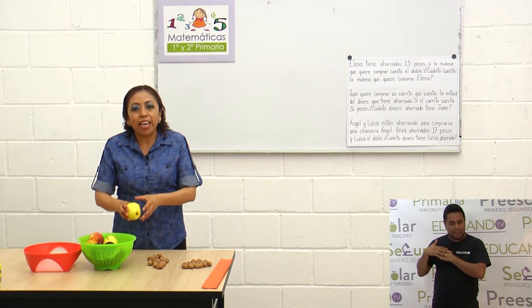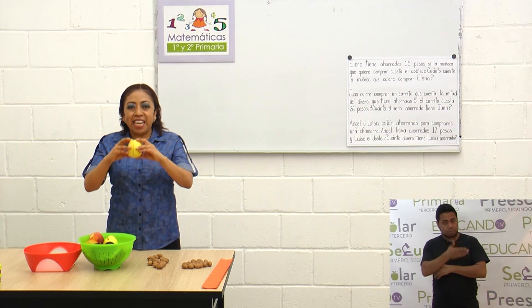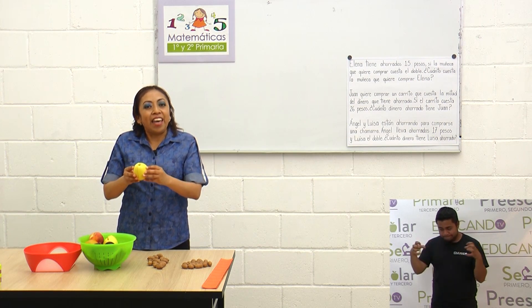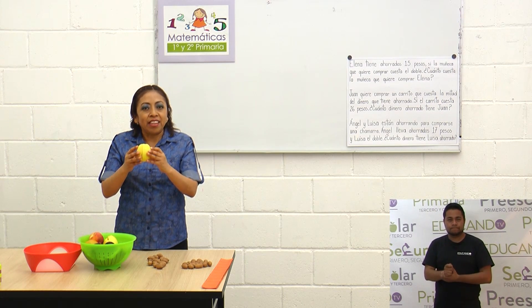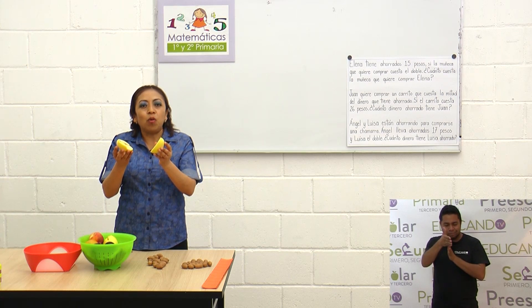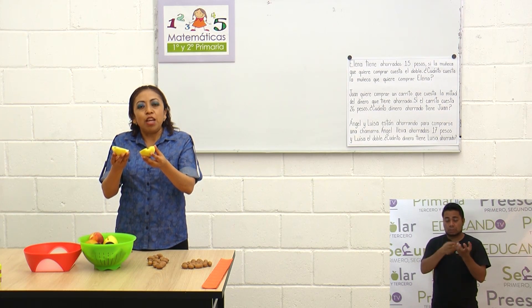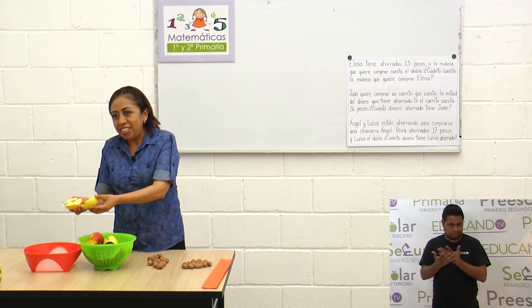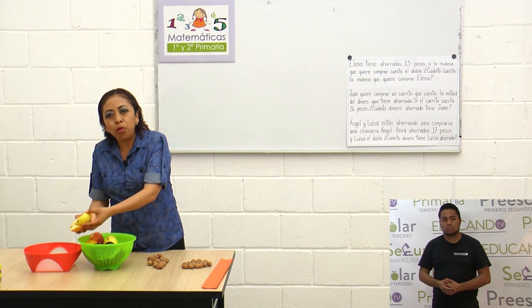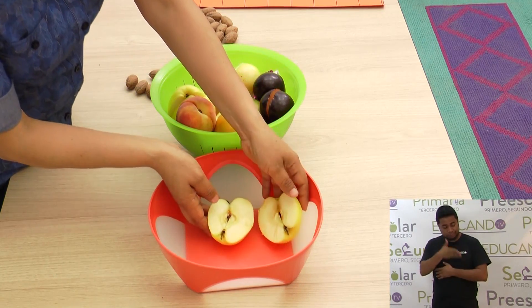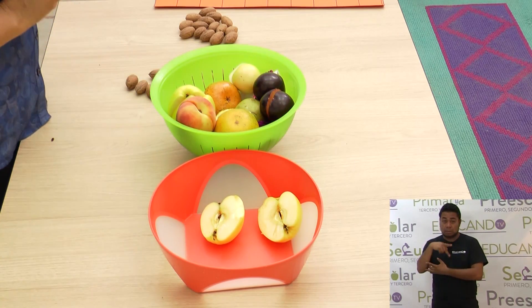Fíjate que tenemos, por ejemplo, una manzana. Pero si yo corto esta manzana en dos partes iguales, cada parte se le llama mitad. Yo corté esta manzana en dos partes iguales. Cada parte la vamos a llamar mitad — fíjate bien cómo lo vamos a hacer. Aquí tenemos dos mitades.